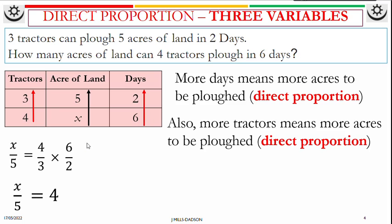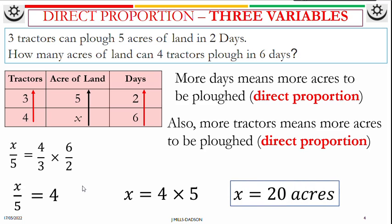Work this out. When you work this out, x over five equals four. So x equals four times five. X will be 20 acres.